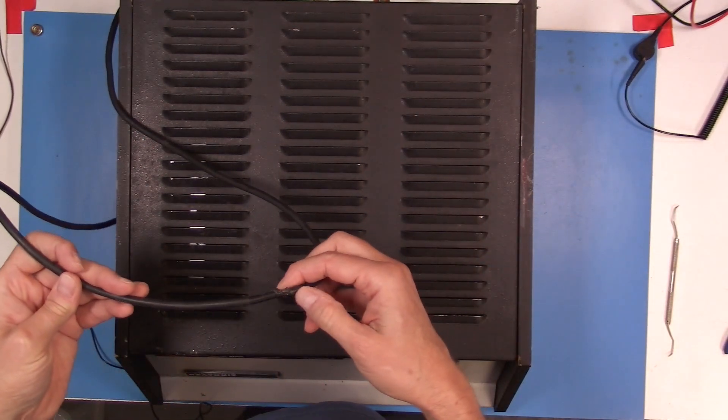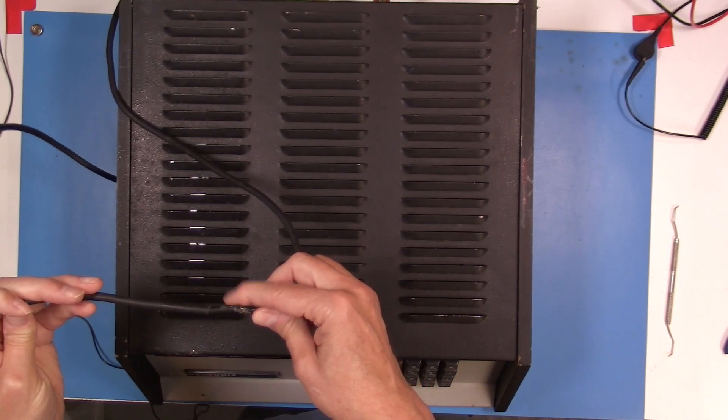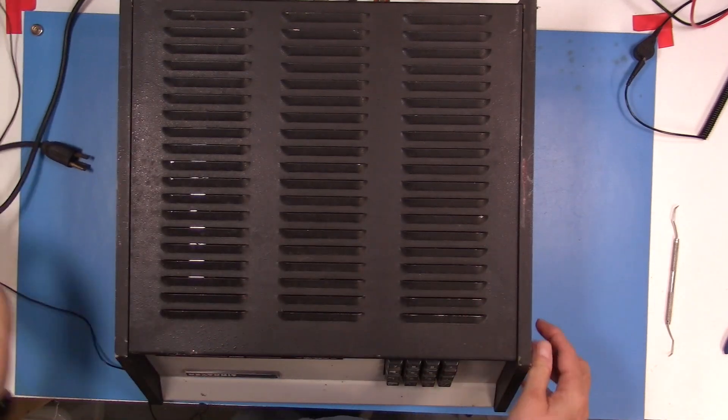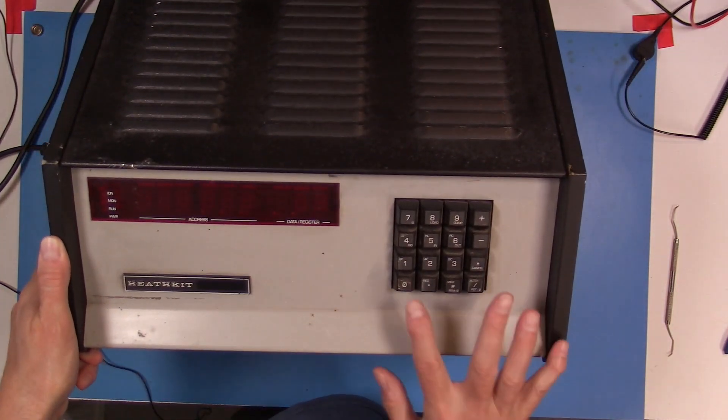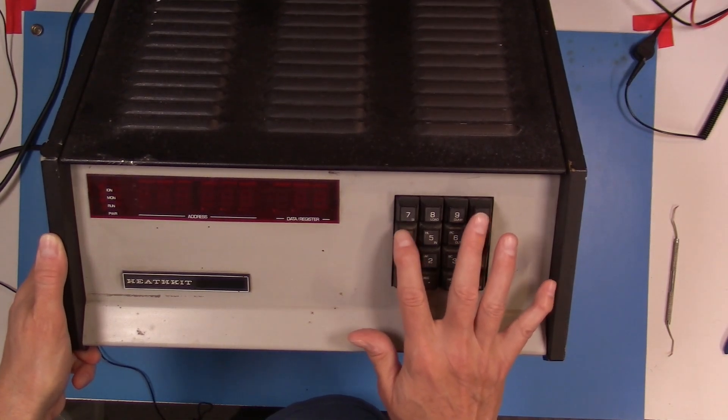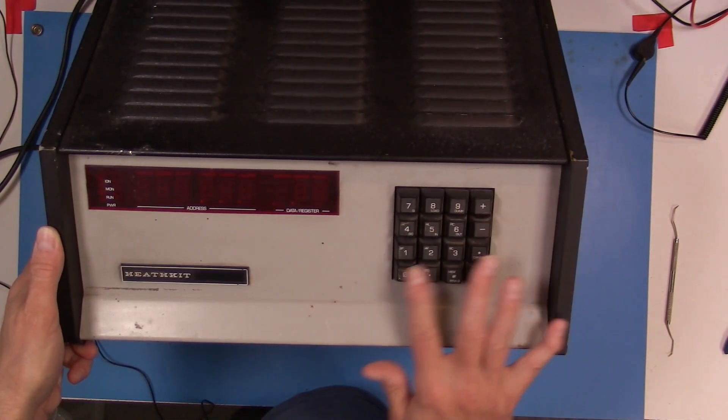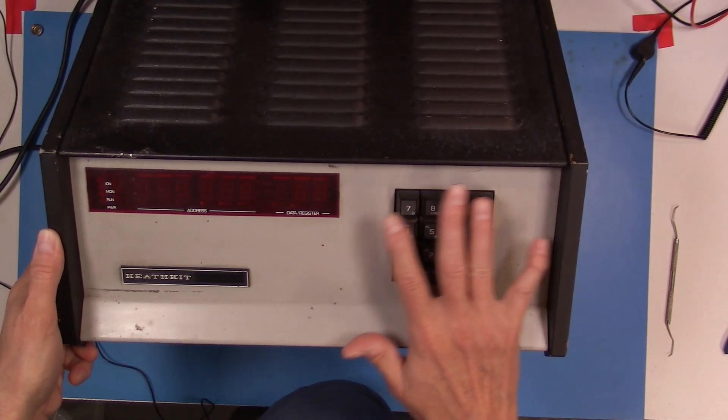I also noticed that the power cord has got some areas where it looks like it's melted, and I don't think this is from the wire getting hot. It just looks like maybe a soldering iron or something got up against it. I also noticed that the keys, a lot of them are kind of shedding the plastic coating on the top of the stickers that go on the keys.